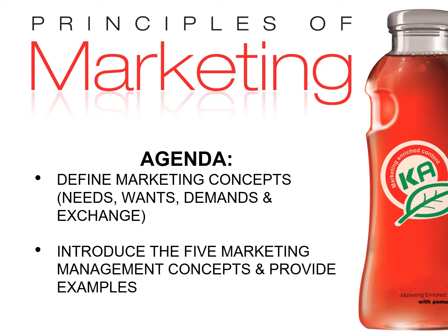Then we're going to go over the five marketing management concepts: the production concept, the product concept, the selling concept, the marketing concept, and the societal marketing concept. It's a little confusing because we use 'the marketing concept' as just one of the five. The idea is to emphasize different approaches to marketing — not all of them are good approaches — and what are the advantages and disadvantages of each marketing orientation.